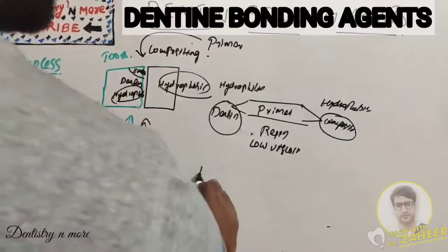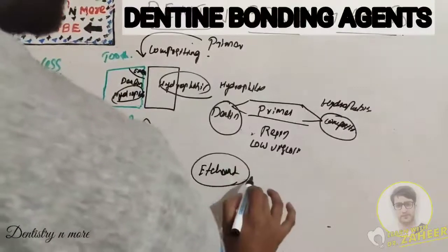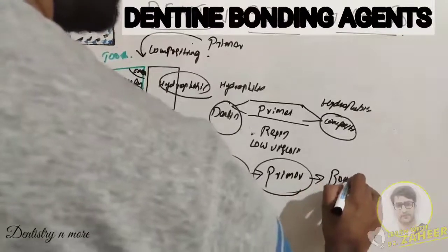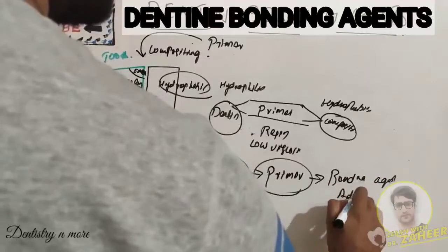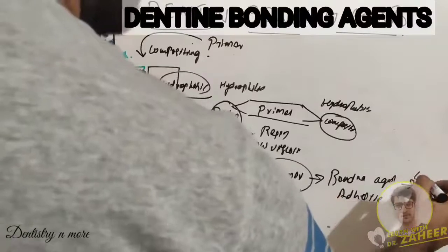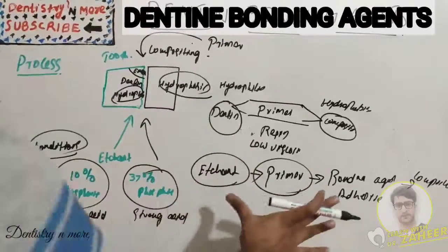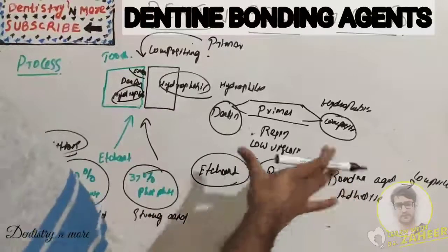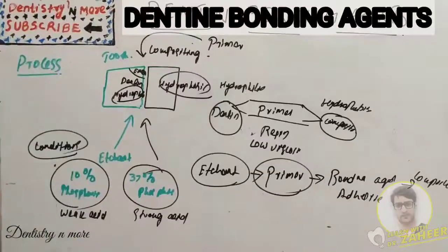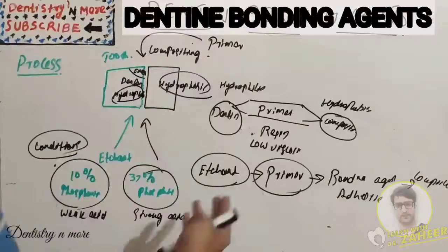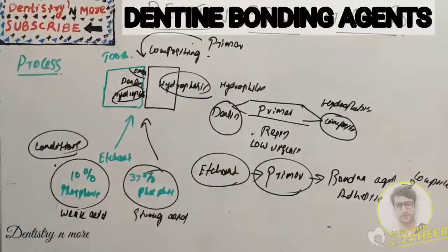The basic process is: first we apply etchant, then we apply primer, then we apply bonding agent or adhesive, and over that we apply composite. While moving to the generations of bonding agents, sometimes these steps are combined into fewer bottles to make the dentist's job easier. Various generations have improved properties and ease of application - sometimes etchant is applied first, washed, dried, then primer applied, cured, then bonding agent applied, and finally composite.